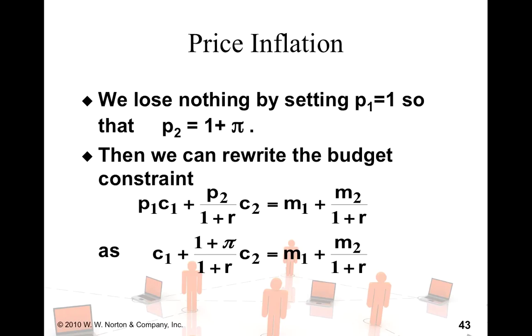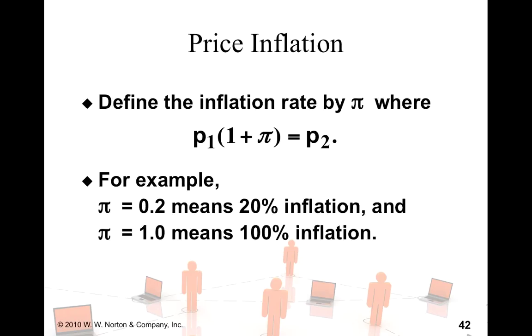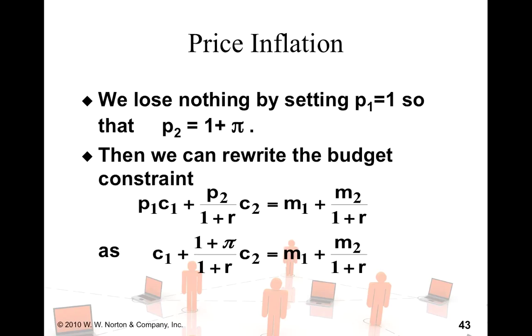Now, to make our life simple, let's do one thing. Let's set price of the first period consumption bundle to be 1. In that case, the second period price becomes 1 plus pi. It's just easier to handle the ratios.